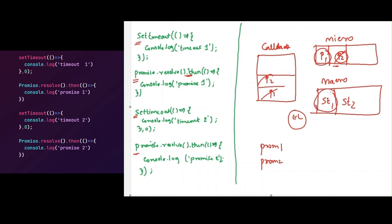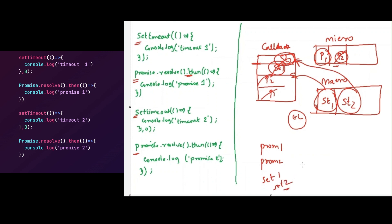Once everything is completed in the micro-task queue, JavaScript will move to the setTimeouts in the macro-task queue. SetTimeout 1 will be pushed into the call stack and executed immediately, so 'timeout 1' will be logged to the console. The only remaining item is setTimeout 2, which will be pushed into the call stack, executed immediately, and 'timeout 2' will be logged to the console.